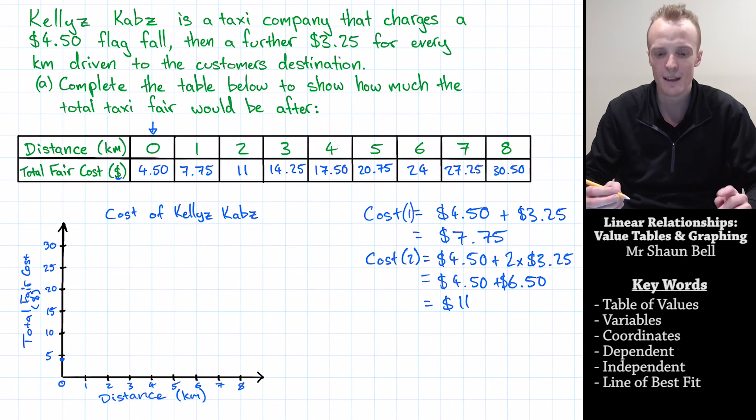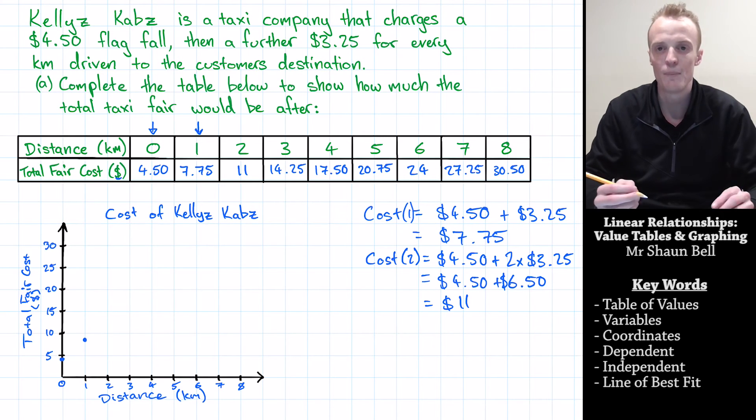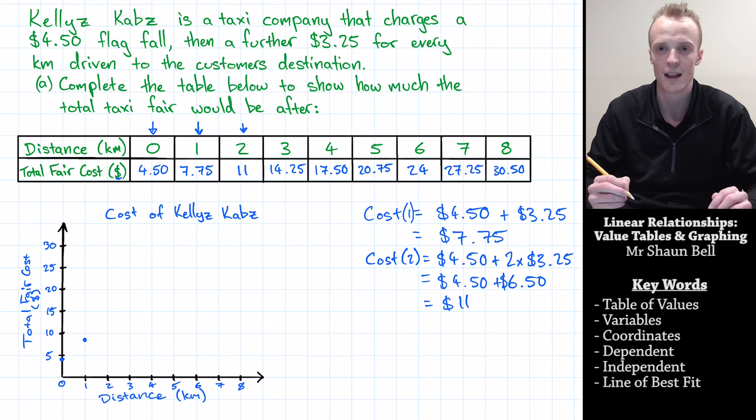We then repeat that for the next set of coordinates, that one kilometre coordinates. And we find where one kilometre would be on our x-axis, and we find where $7.75 would be represented on our y-axis, and we put another dot. We keep going for this until we've completed all of the coordinates of our table of values. But I'm going to skip ahead.